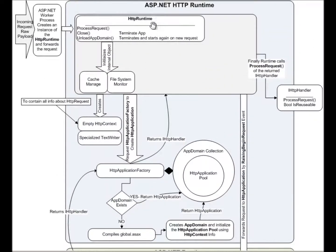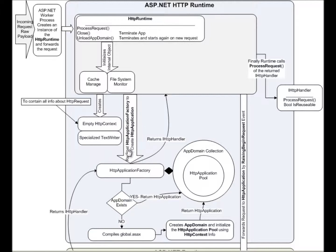When the HTTP Runtime receives the request, it arrives at ProcessRequest. What it does is initialize some internal objects like Cache Manager and AppWide System Monitor. It also creates an empty HTTP context, and this context holds an HTTP Request object containing all the information about the client. It also creates a specialized text writer for the response, then forwards the request to HTTP Application.